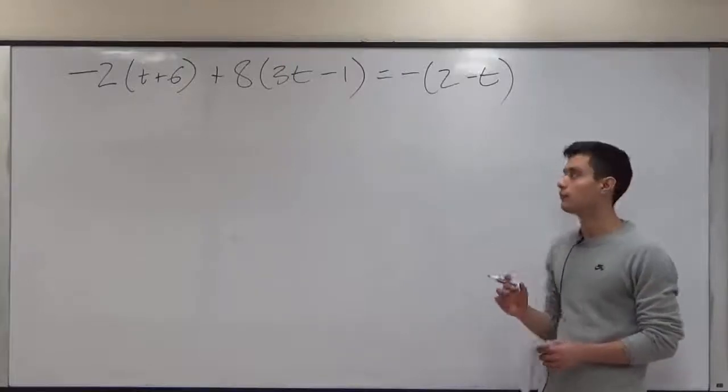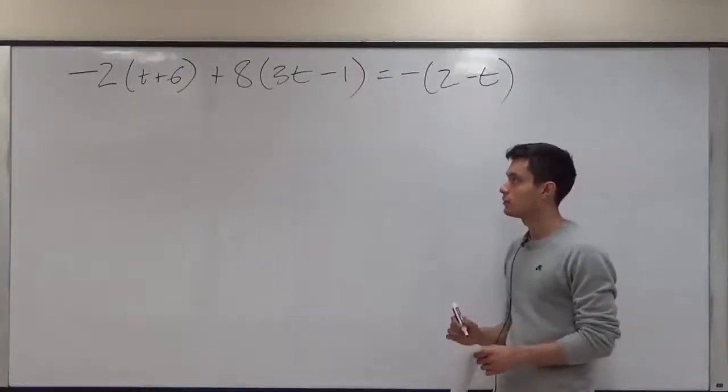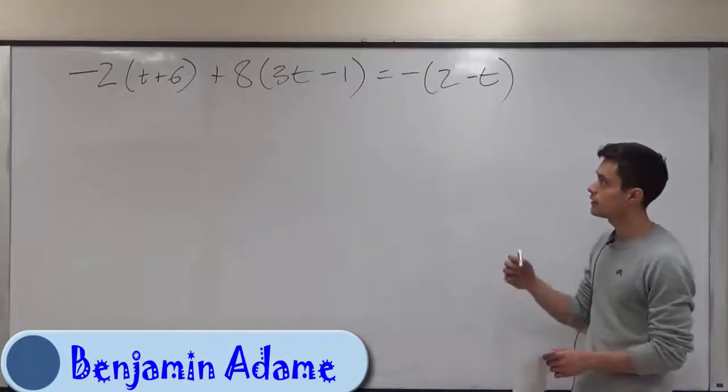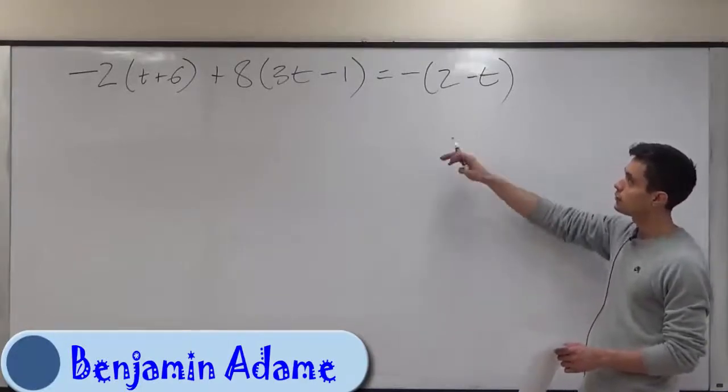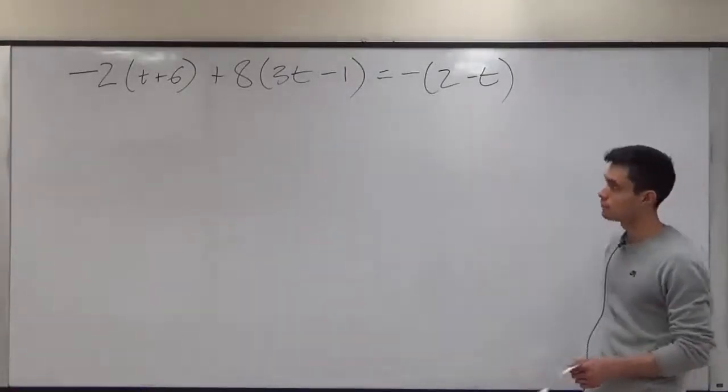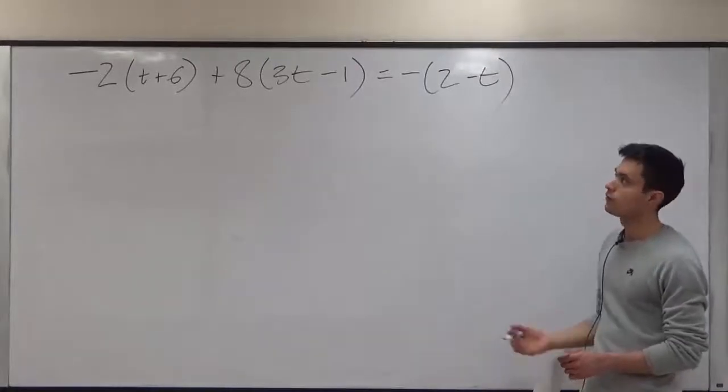Hello, welcome to helpyourmath.com. Today we have the problem negative 2t plus 6 plus 8 times 3t minus 1 equals negative 2 minus t. So we want to solve for t.